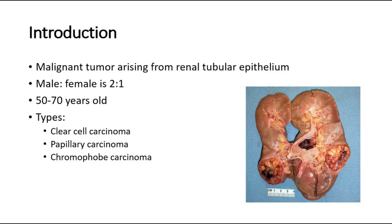It is the most frequently occurring solid lesion within the kidneys. Comparing between males and females, males are twice more likely to have renal cell carcinoma. The majority of cases present in the 50 to 70 year age group. Most cases are sporadic, but they are also often seen in families with von Hippel-Lindau disease and tuberous sclerosis complex.